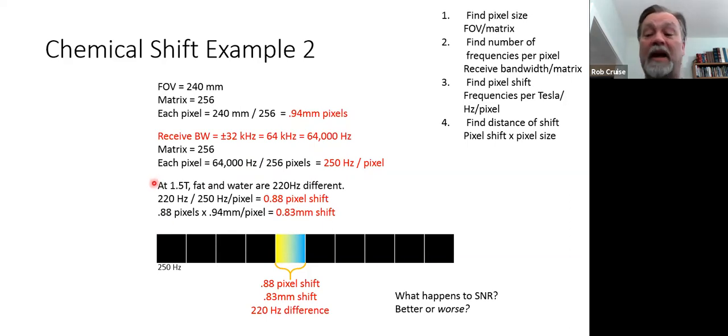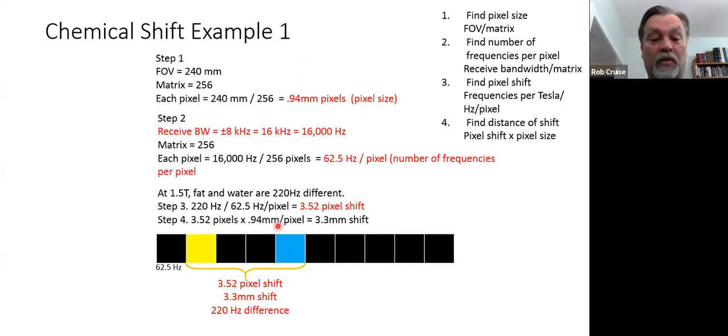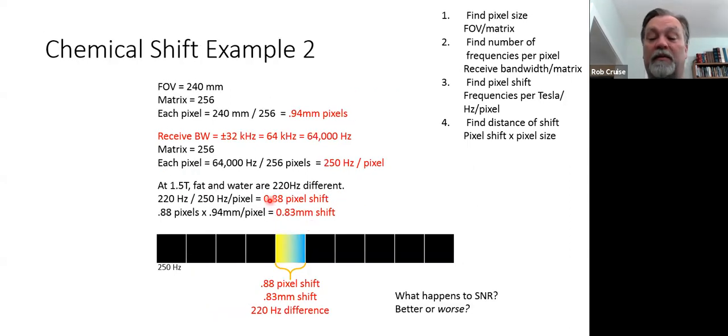We're still using that 1.5 Tesla magnet, so we're still going to plug in 220 hertz. 220 divided by 250, which we got up here on step number two, equals 0.88 pixel shift. So we now use this information, 0.88 pixel shift. We plug in here times the pixel size from step number one, and you times that out and get 0.83 millimeter shift. So as you can see, from 3.5 and 3.3 to 0.88 and 0.83, much better.